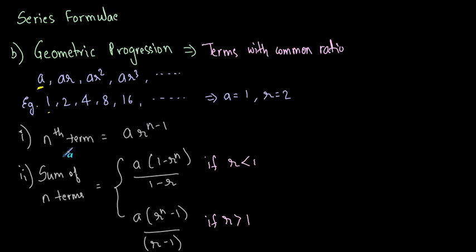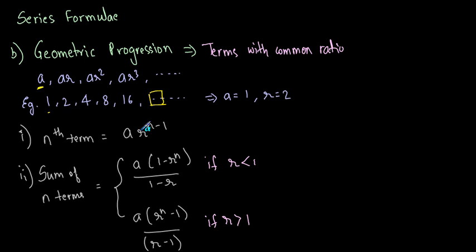If you have to find out the nth term — say you have to find out the sixth term in this example — we have 5 terms and you have to find the sixth term. You make use of this formula: the nth term is equal to a into r raised to n minus 1. Put n equal to 6 and the respective values of a and r to find out the value of the nth term.